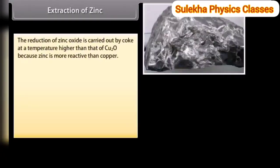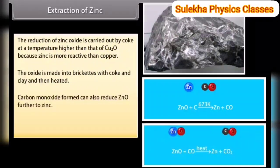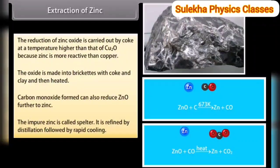Extraction of zinc. The reduction of zinc oxide is carried out by coke at a temperature higher than that used for Cu₂O because zinc is more reactive than copper. The oxide is made into briquettes with coke and clay and then heated. Carbon monoxide formed can also reduce ZnO further to zinc. The impure zinc is called spelter and is refined by distillation followed by rapid cooling.